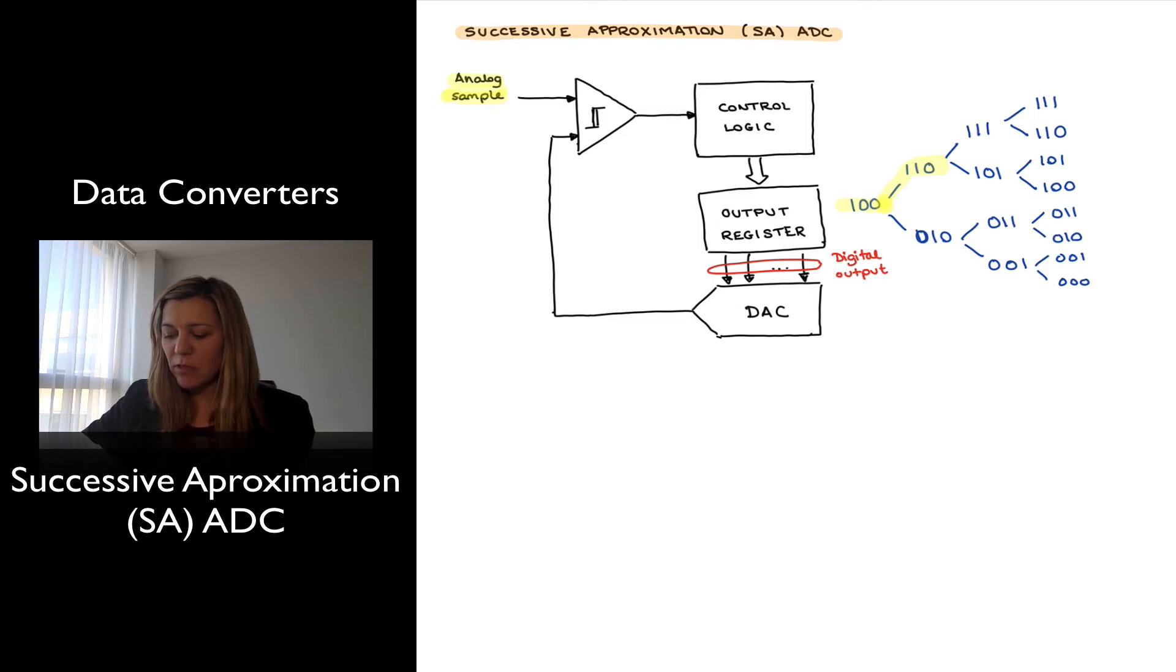Let's imagine that I had determined my output at that point was smaller than my analog sample, so I know I need to keep increasing it. So I test for my next most significant bit, which will be the second bit in this three-bit example, and I set that to one.